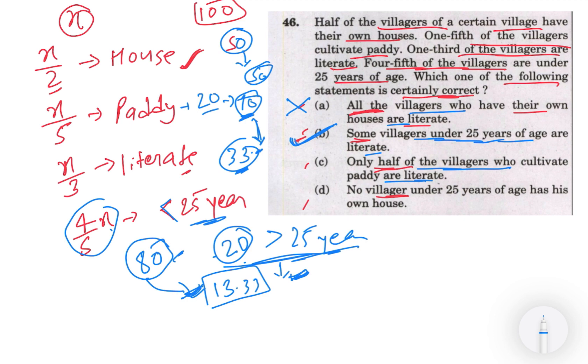May be aap jo paddy 20 cultivate karte hai, jo 80 paddy nahi cultivate karte hai, ho sakta hai ki 33 ke 33 literate hai woh jo paddy cultivate nahi karte hai usmeh se hai. Toh us hesaap se ek bhi paddy cultivator literate nahi ho sakta, toh yeh bhi galat ho gaya.